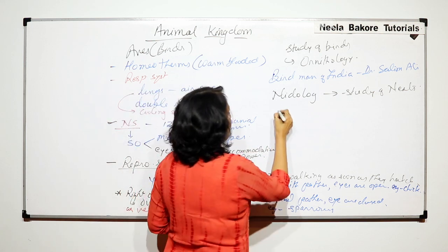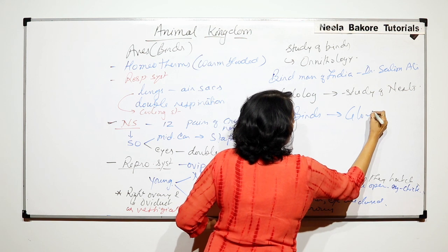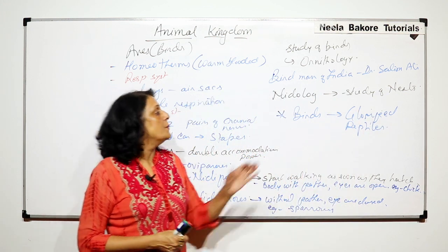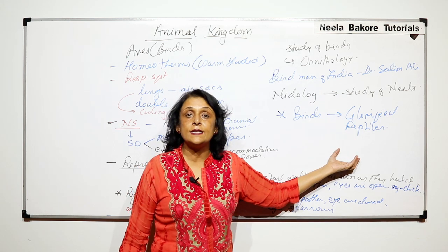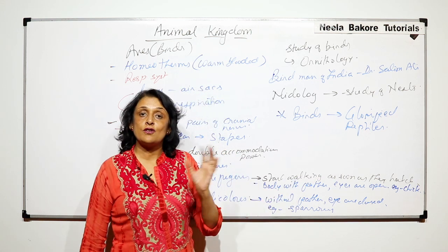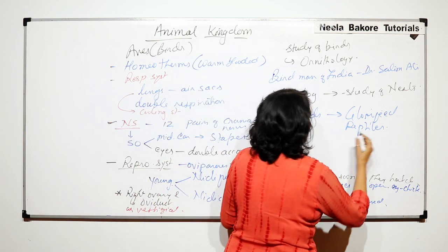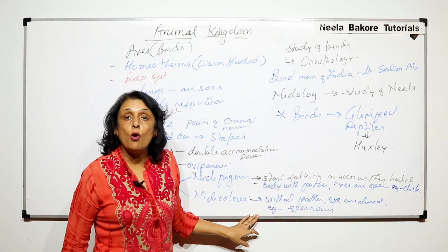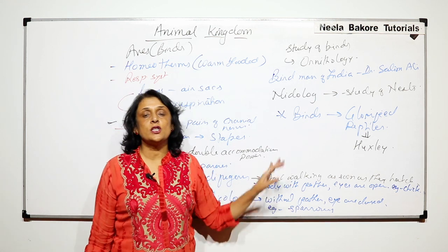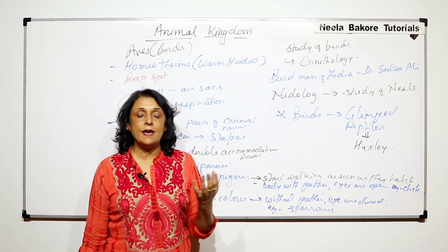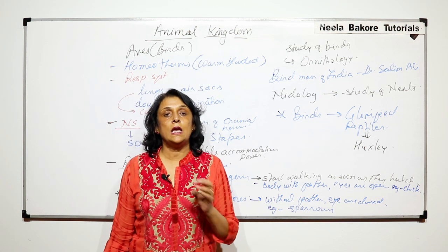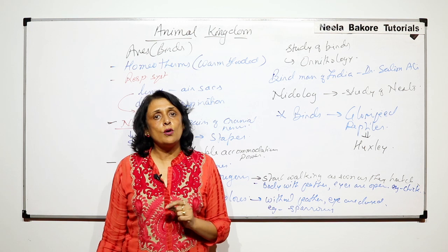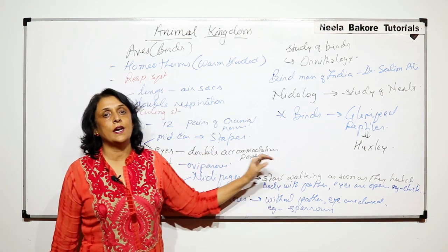Birds are also called glorified reptiles. We have evidences which prove that birds have evolved from reptiles. One such evidence is Archaeopteryx — the fossil of Archaeopteryx shows characteristic features of both birds and reptiles. This term was given by Huxley, who called birds as glorified reptiles. In the next part, we will take up examples including flightless birds like ostrich, penguin, and emu, extinct birds like dodo, and other birds with unique characteristic features.